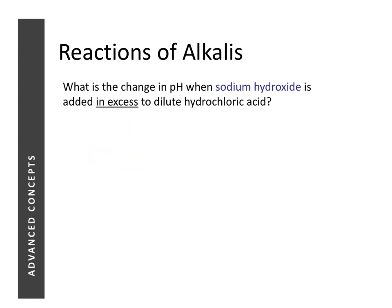In a related question, we look at the change in pH when sodium hydroxide is added in excess to dilute hydrochloric acid. We again start with hydrochloric acid, which is a strong acid, so the pH starts at around 1. When sodium hydroxide is added, it undergoes acid-base neutralization — the acid is reacted — so the pH slowly increases. At a certain point, all the hydrochloric acid will be fully reacted and the pH will be 7.